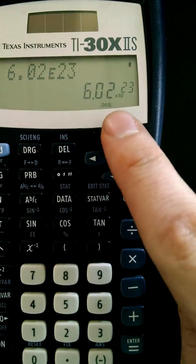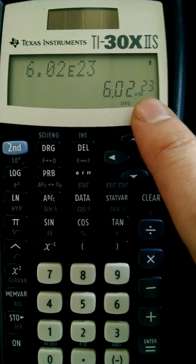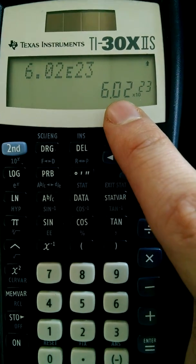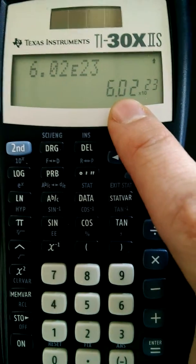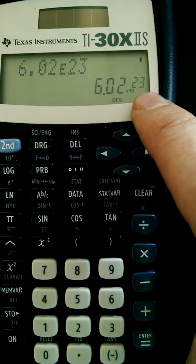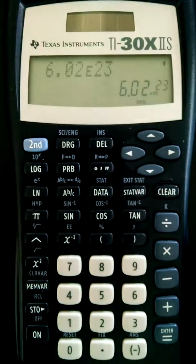If you ever get answers again with times 10 to the 23rd, don't forget that. It's very common to just write down, oh, the answer is 6.02 atoms. You can't have .02 of an atom. So 6.02 times 10 to the 23rd atoms would be correct.